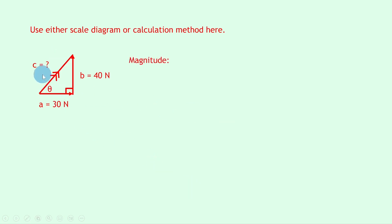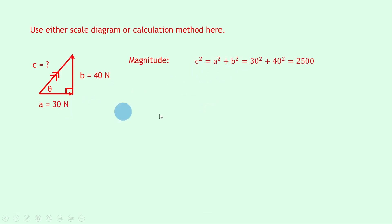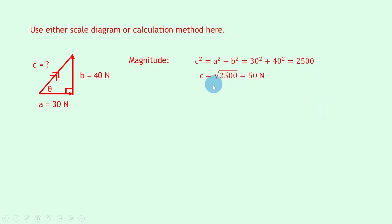We can find the magnitude of the unknown side C using Pythagoras: C squared equals A squared plus B squared. Substituting in the numbers gives 30 squared plus 40 squared, which equals 2500. Taking the square root gives 50 newtons for the magnitude.